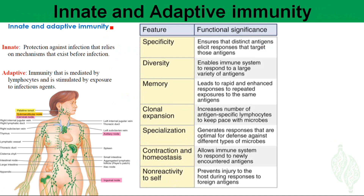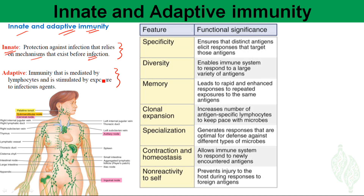Another basic property to know is the distinction between innate and adaptive immunity, which is always prominent in immunology. The innate immune system is defined as a protection system against infection that relies on mechanisms existing before the infection — meaning it is active even before the invader enters the body. The adaptive immune system, by contrast, mounts its response after the invader enters the body.